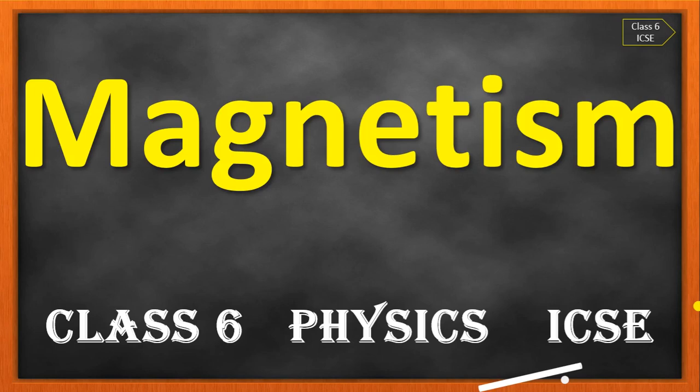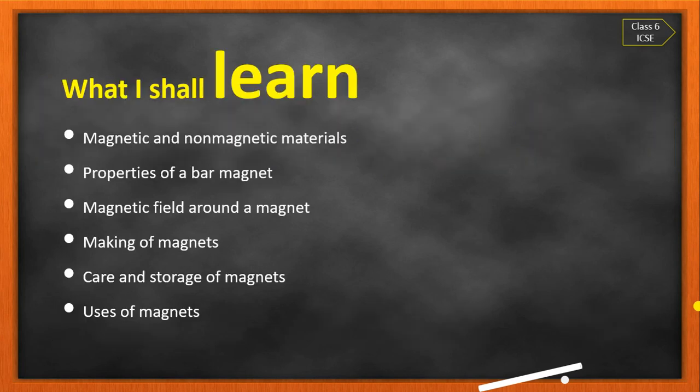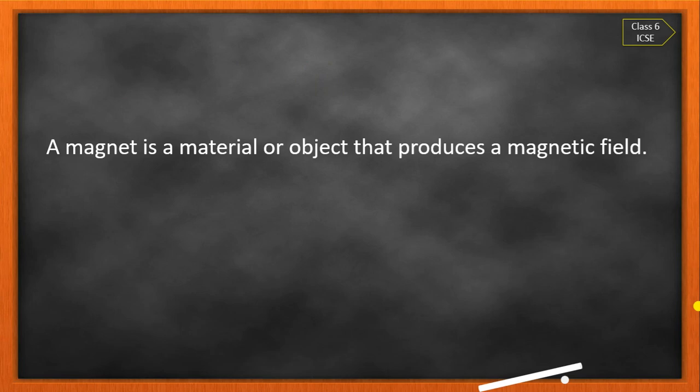Hello my dear students. In this part of the video we will discuss the lesson Magnetism, Class 6 Physics ICSE. We will discuss magnetic and non-magnetic materials, properties of the bar magnet, magnetic field around the magnet, and in the next part we will discuss making of magnets, care and storage of magnets, and uses of magnets. My name is Sadashu Takley and you are watching Knowledge Planet.